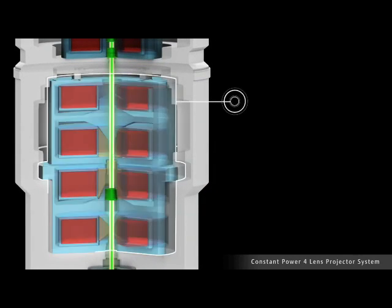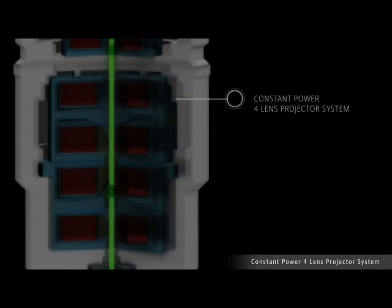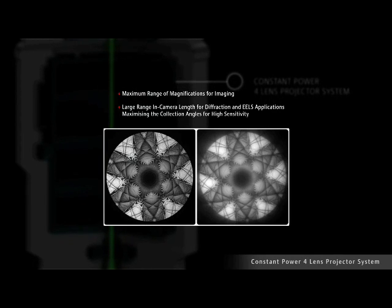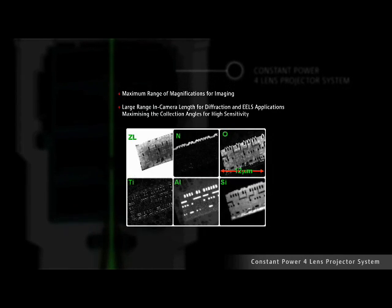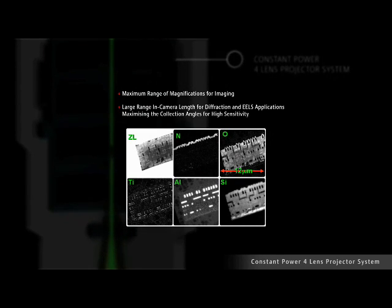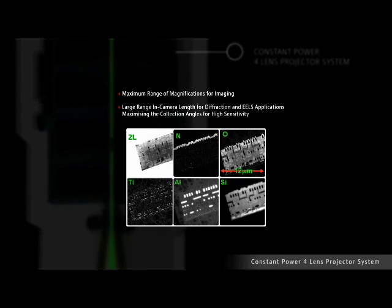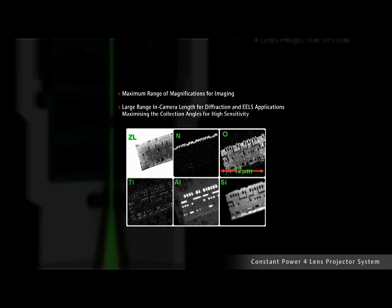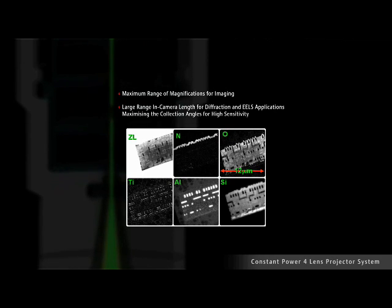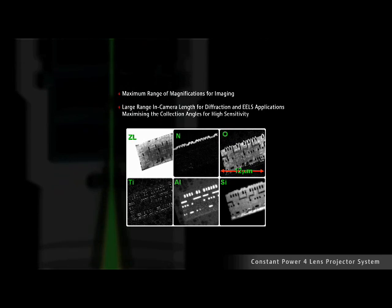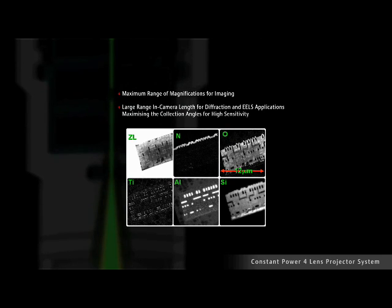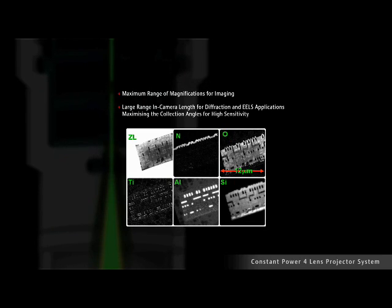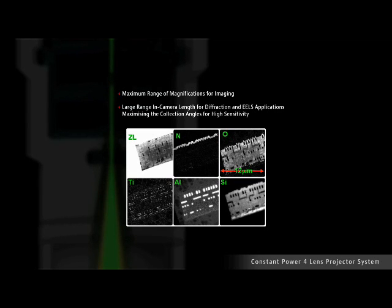The projector system is ultra-stable due to its constant power electronics and offers a maximum range of magnifications for imaging and large range in camera length for diffraction and EELS applications, maximizing the collection angles for high sensitivity. The system is not only designed to perform at extremely high magnifications for atomic imaging or spectroscopy applications as shown before, but the special post-column energy filter lens series enables one to acquire high contrast zero-loss filter diffraction patterns, large angle convergence beam electron diffraction patterns, or extremely low magnification images in chemical mapping in energy-filtered TEM of entire lamellas produced by focused ion beam sample preparation.